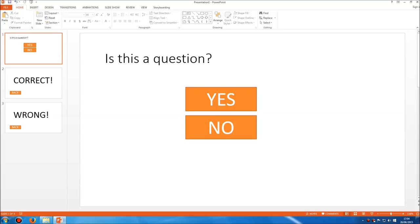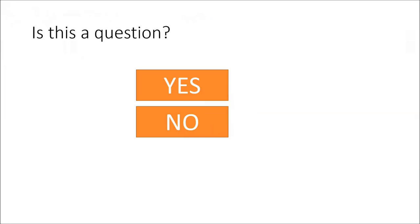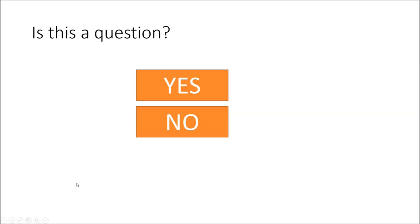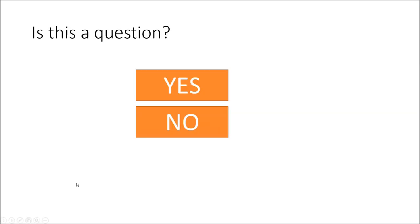Let's have a look at this. If I click F5, we see the question. If I click no, I go to the wrong page. Click on the back button and we're back to the question. I click on yes and we're correct. And we go back. So that's working fine, no problem at all.